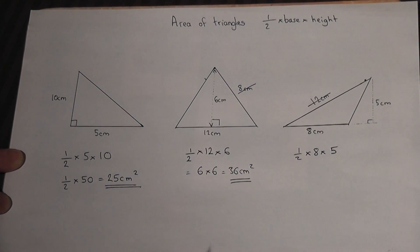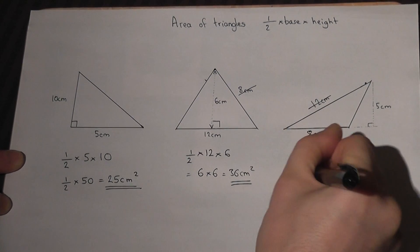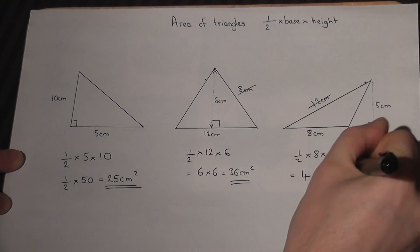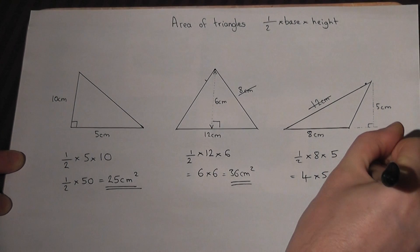Two options here. I'll do the half of 8, which is 4. 4 times 5 equals 20 centimeters squared.